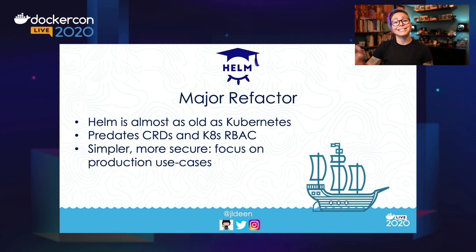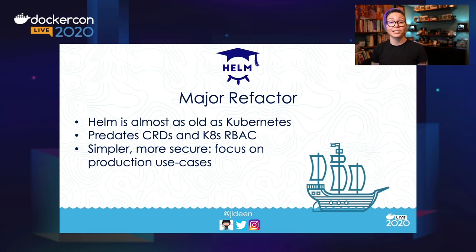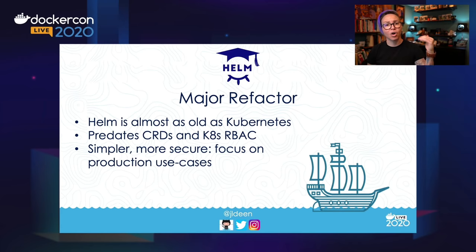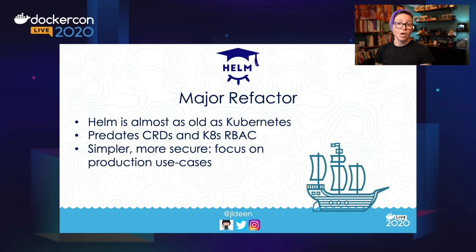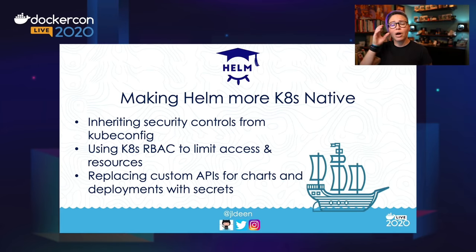Helm predates some very specific security-related features in Kubernetes — for example, CRDs or Custom Resource Definitions, and RBAC, which is Role-Based Access Control. So by the end of Helm 2, we were kind of tacking on all these security concerns. We had Tiller, we made service accounts, cluster role bindings, and you'd have to jump through a lot of hoops. As a result, with Helm 3 we made it simpler, more secure, and really focused on production and what our community was doing in production. We also chose to make Helm more Kubernetes-native, which added to the dramatic simplification.